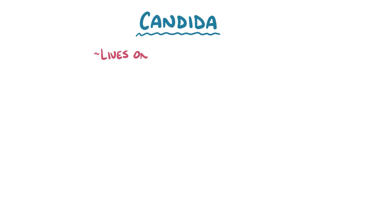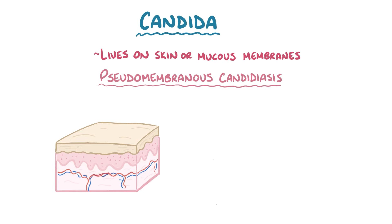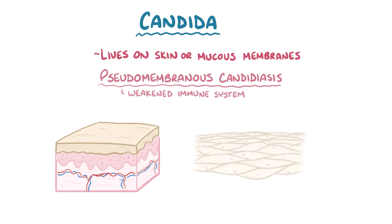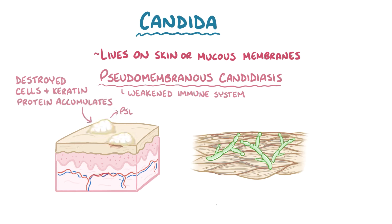Candida typically lives on the skin or mucous membranes, and when it starts to overgrow, it can damage nearby tissue. There are a few patterns of injury. The most common one is pseudomembranous candidiasis, and it's primarily due to a weakened immune system that allows for Candida overgrowth. The result is destruction of the stratified squamous epithelium layer, which is the outermost layer of the skin or mucous membranes. This causes accumulation of the destroyed cells in the keratin protein that fills the outermost layer, forming a white lesion called a pseudomembrane that looks kind of like cottage cheese.